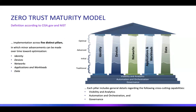The zero trust maturity model came from CISA.gov. It's got five pillars: identity, devices, networks, applications and workloads, and data. Across those, we also have pieces that strengthen as you mature: governance, automation, orchestration, and visibility and analytics.